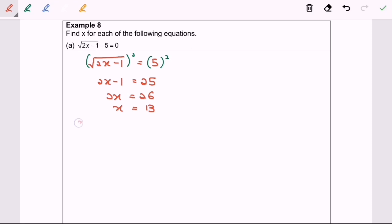So first, what we have to do is substitute the value x equals 13 into equation A. So, square root of 2 multiplied by 13 minus 1 minus 5.